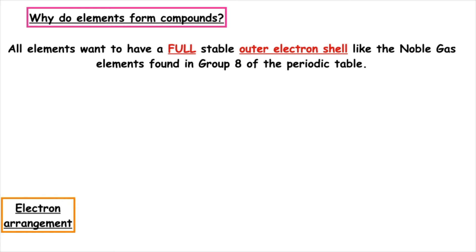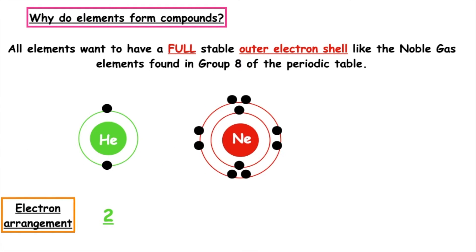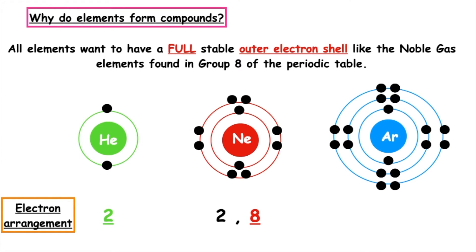If the outermost occupied energy level is the first energy level, it can hold and wants to achieve a maximum of two electrons. If the outermost energy level is the second energy level, it wants to achieve and hold a maximum of eight electrons. If the third energy level is the outermost occupied energy level, it wants to also occupy a total of eight electrons.